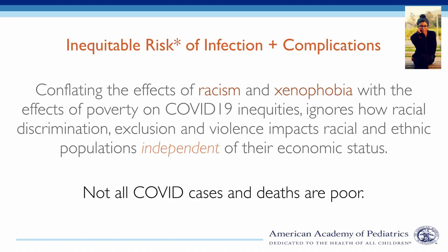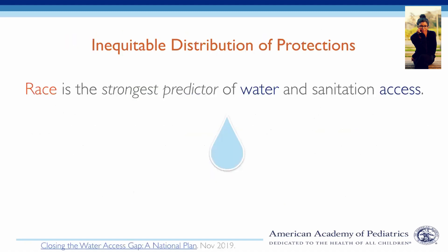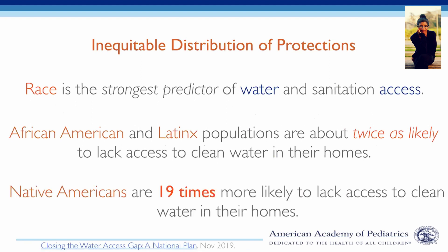Doing so also inaccurately assumes that all those disproportionately affected are poor. Now let's review how protections have been inequitably distributed. Handwashing is one of the most important ways to limit infectious disease spread. But race — not income — is the single greatest predictor of access to clean water in the U.S. African American and Latinx populations are about twice as likely to lack access to clean water as white households, and Native Americans are 19 times more likely. This shows how structural racism, operating through segregation and disinvestment, shapes the distribution of COVID-19.